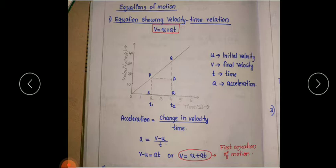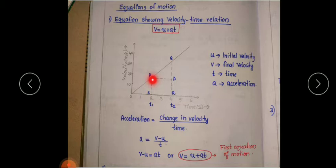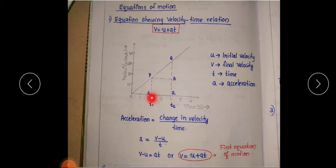We already learned that the area under a velocity-time graph gives displacement. In order to find the displacement between the interval T1 and T2, we have to find the area under this graph. Draw a perpendicular line to this graph so that it meets at point P, and again draw a perpendicular line so it meets at point Q. That will give us a shape like this — and this is a trapezium.